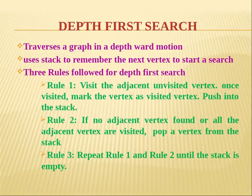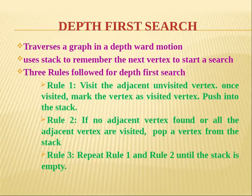Depth-first search traversal uses depthward motion and uses a stack to remember the next vertex to start. There are three rules: Rule 1 — visit the adjacent unvisited vertex, mark it as visited, and push it into the stack. Rule 2 — if no adjacent unvisited vertices are found or all adjacent vertices are visited, pop from the stack. Rule 3 — repeat rules 1 and 2, with push and pop operations, until the stack is empty.